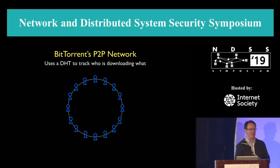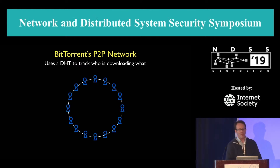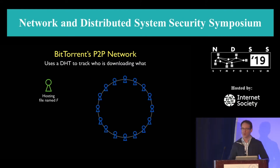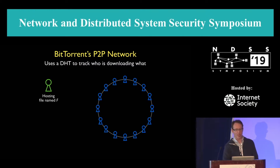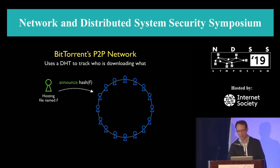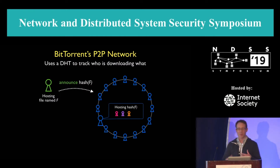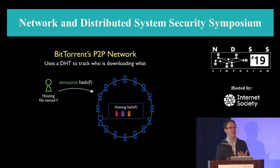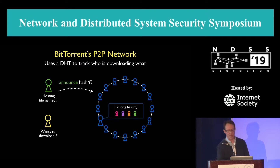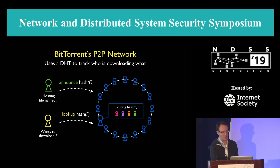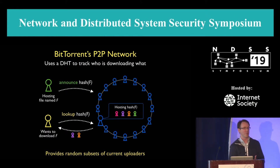Hajime is so resilient because it mixes in with a public peer-to-peer network, namely BitTorrent's distributed hash table, or DHT. BitTorrent uses the DHT as a means of keeping track of peers that are hosting and fetching files. When a peer has a file they're hosting, they take a hash of the file name. That hash gets routed through the DHT to the peer responsible for storing that hash value, which stores an updating list of all peers from which that file can be fetched. This announcement lasts about 32 minutes unless the host re-announces. When a peer wants to fetch that file, it forms the hash of the file name, looks it up in the DHT, and the DHT returns a random subset of peers from which it can download.